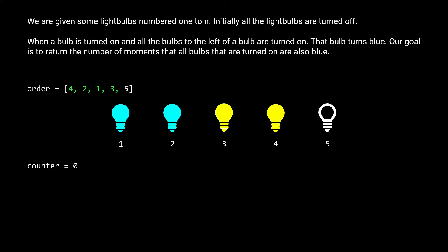In the fourth moment, we turn on bulb 3, and that causes bulbs 3 and 4 to turn blue. At this point, all the bulbs that are turned on are blue, so we add one to our counter. In the last moment, we turn the fifth bulb on and it turns blue. Again, all the turned-on bulbs are blue, so we add one to our counter from 1 to 2. So for this particular example, the final answer we return is 2.